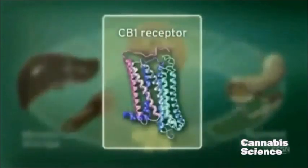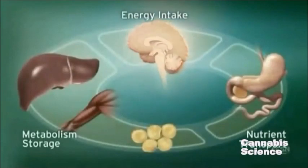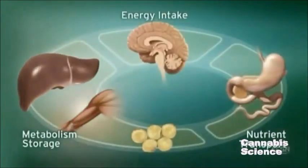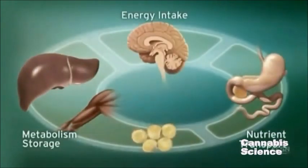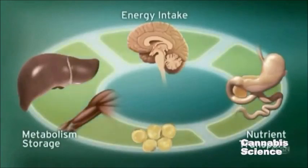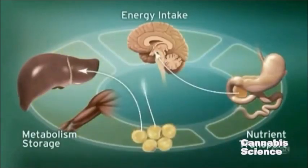CB1 receptors are located in the brain, digestive tract, muscle, and adipose tissue. Integration of these central and peripheral ECS components is achieved through neuronal and hormonal signaling.